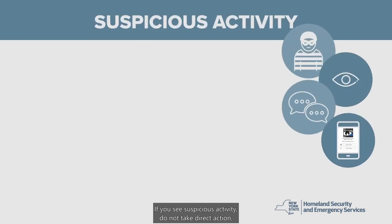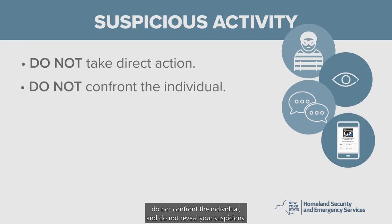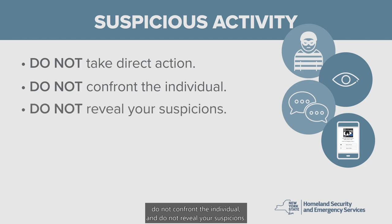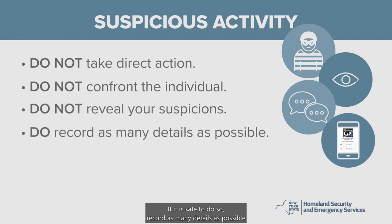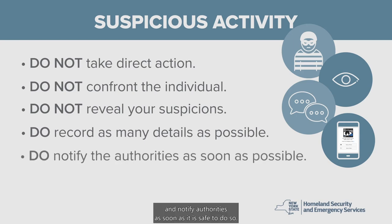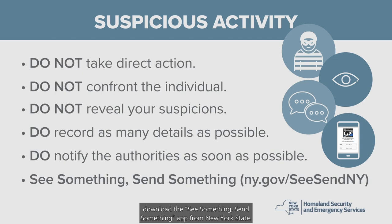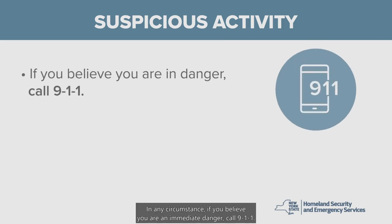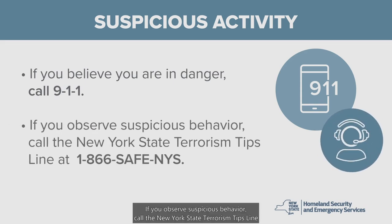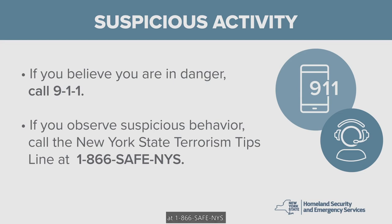If you see suspicious activity, do not take direct action. Do not confront the individual and do not reveal your suspicions. If it is safe to do so, record as many details as possible about the individual and their activity and notify authorities as soon as it is safe. If you have a smartphone, download the 'See Something, Send Something' app from New York State. If you believe you are in immediate danger, call 911. If you observe suspicious behavior, call the New York State Terrorism Tips line at 1-866-SAFE-NYS.